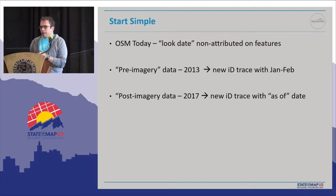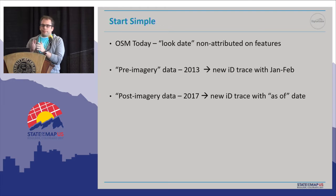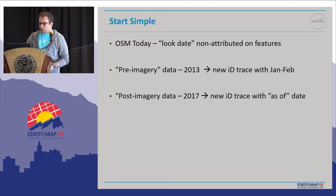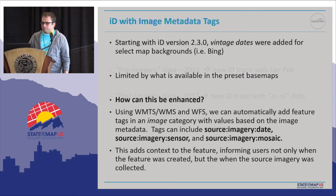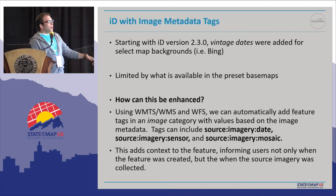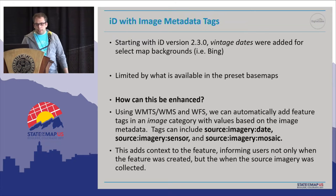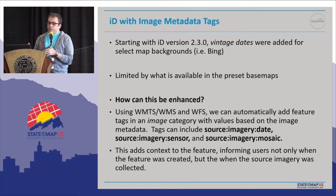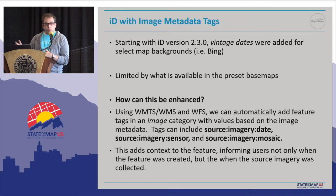So what have we done? We have OSM today, and then we have pre-imagery and post-imagery data. Looking specifically at the hurricane, with fall 2017 as our target zone — what we're proposing, what we've done in a custom version of iD, is using image metadata tags. We're inspired by iD version 2.3, which introduced vintages in the background panel. Specifically for Bing, as you're editing, you can pull up the background panel and it'll say this imagery was collected between 2015 and 2017.